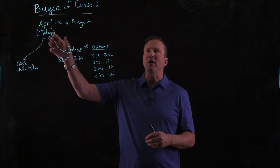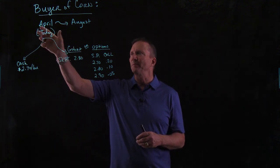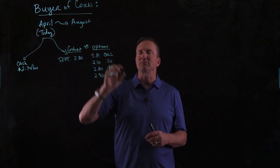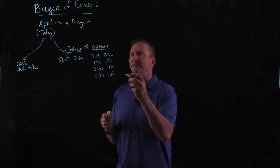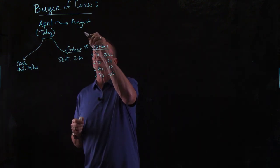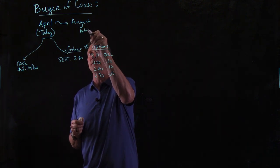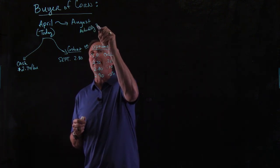So that's what we are. We are a buyer of corn, have a feed mill. Today is April, and we've got risk all the way to August. You might write down that August is when we actually will buy.